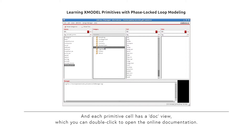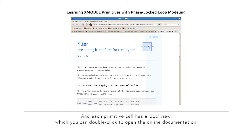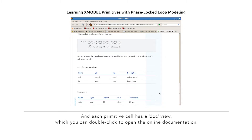Each primitive cell has a doc view, which you can double-click to open the online documentation.